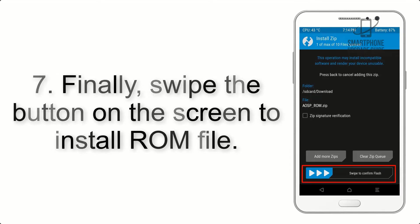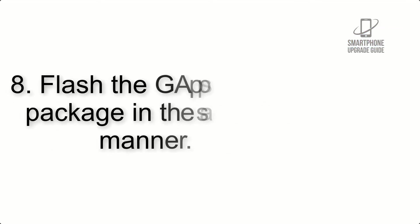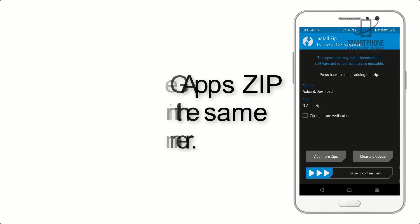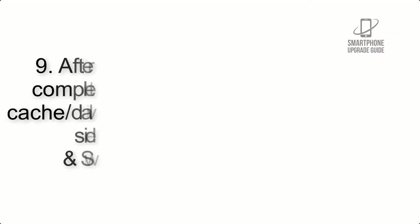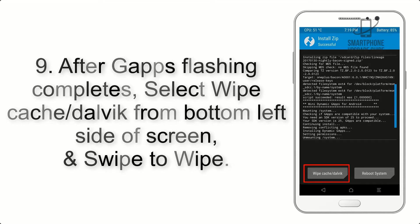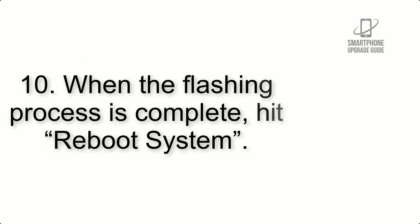Step 7: Swipe the button on the screen to install the ROM file. Step 8: Flash the GApps zip package in the same manner. Step 9: After GApps flashing completes, select Wipe Cache and Dalvik from the bottom left side of the screen and swipe to wipe.